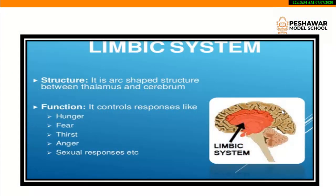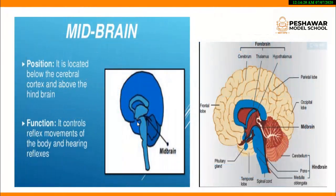The third part of the forebrain is the limbic system. It is drawn in pink color in the diagram. It is an arc-shaped structure located between the thalamus and cerebrum, and it is responsible for emotions such as fear, thirst, anger, and sexual responses.